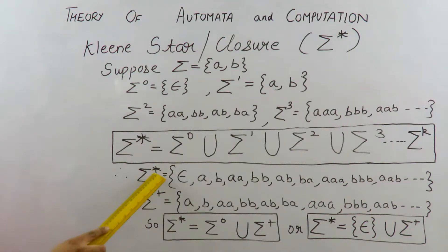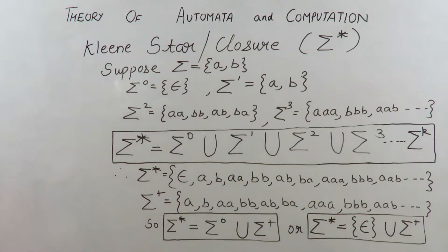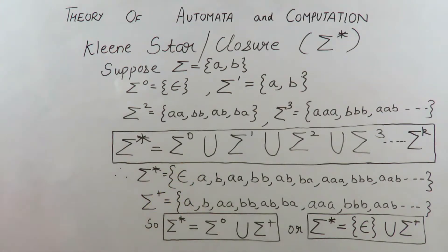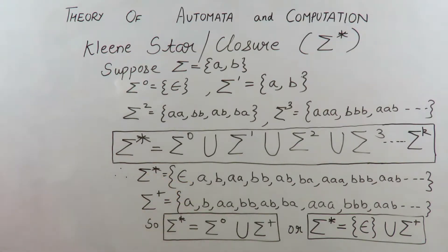The Kleene star set equals null, a, b, aa, ab, ba, bb, and all strings further up to length k. This forms the closure set of all powers of alphabets. There is also sigma plus. The difference between sigma star and sigma plus is that sigma star can include the null string, but sigma plus cannot take the empty string. Sigma plus will contain every other string that is in sigma star, but null will not be included.